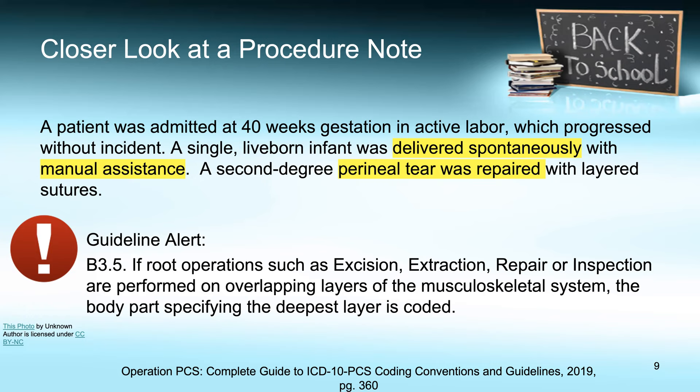Manual assistance is not coded separately. The delivery in this case is spontaneous, so the delivery root operation applies. The perineal tear repair will also be coded. It is a second-degree tear, which goes all the way down to the muscle — the perineum muscle. Since the repair was performed on the pregnant female and not on the products of conception, that repair is going to be coded from the medical and surgical section.